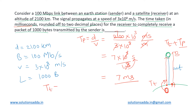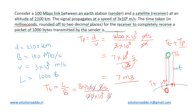The transmission delay TT = L/B — packet length divided by bandwidth. Packet length is 1000 bytes and bandwidth is 100 Mbps = 100×10⁶ bits per second. Converting: 1000 bytes = 8000 bits, so TT = 8000 / (100×10⁶) = 80/10⁶ seconds. Converting to milliseconds: 80/10⁶ × 10³ = 80/1000 = 0.08 milliseconds.